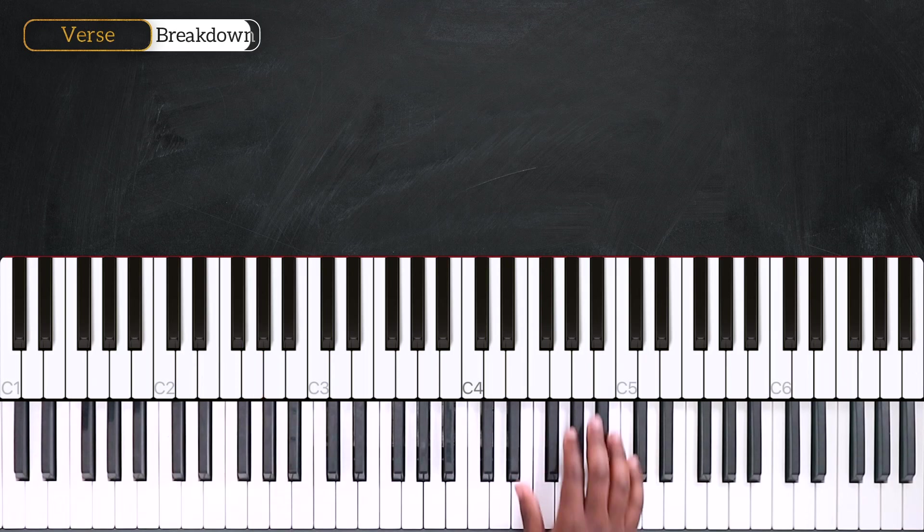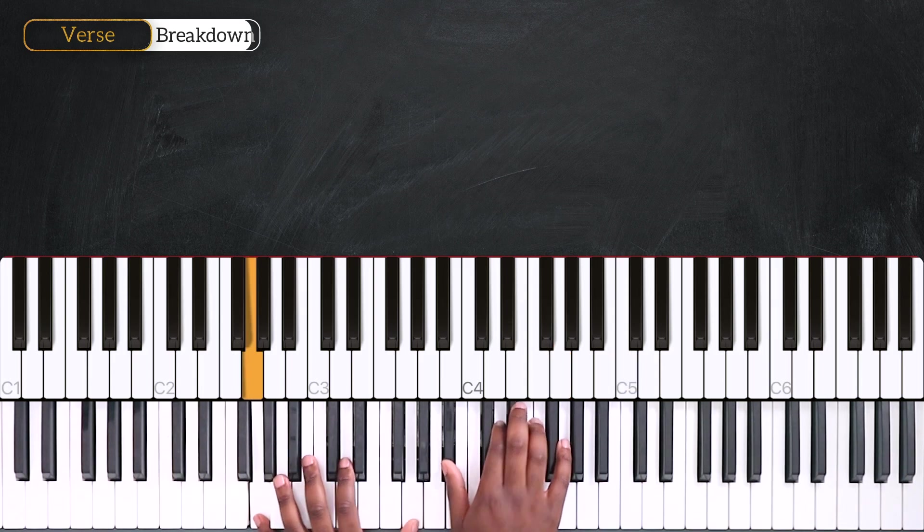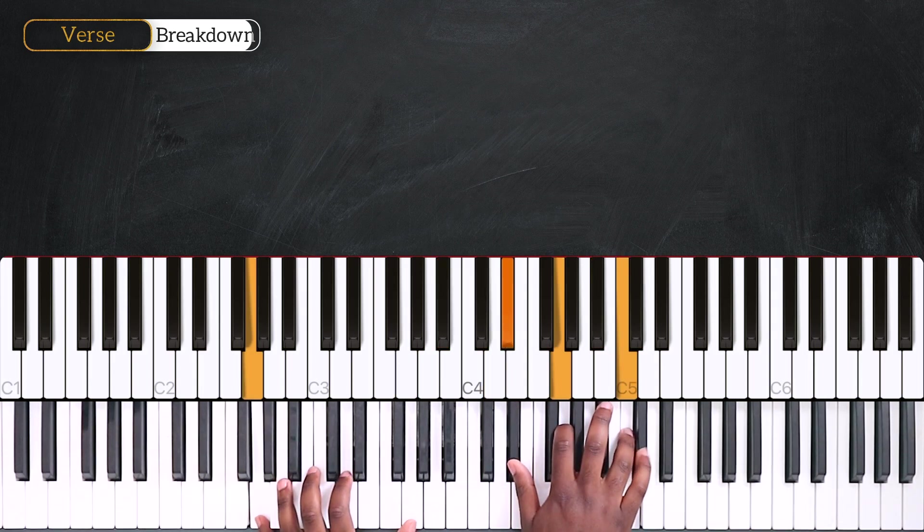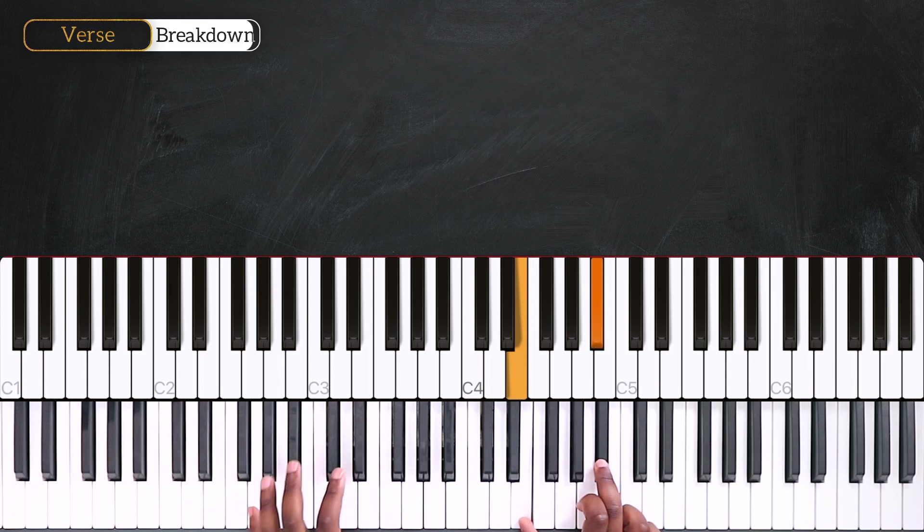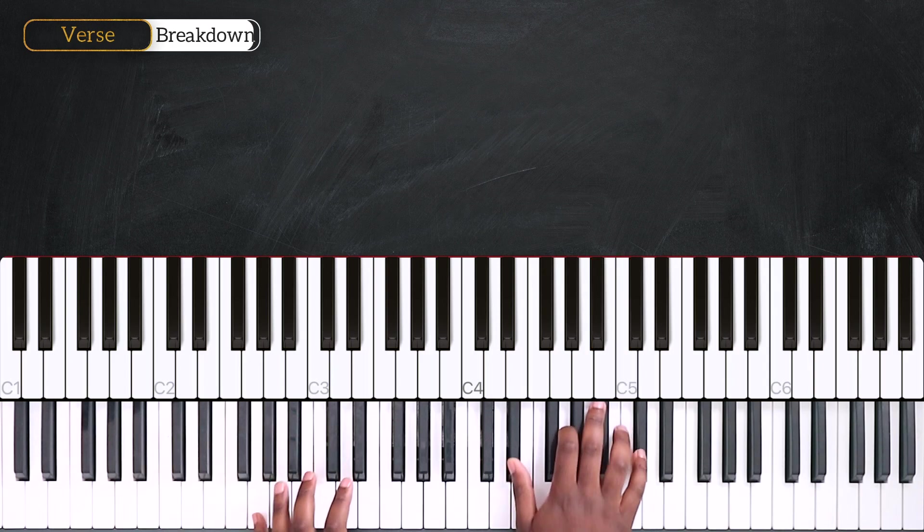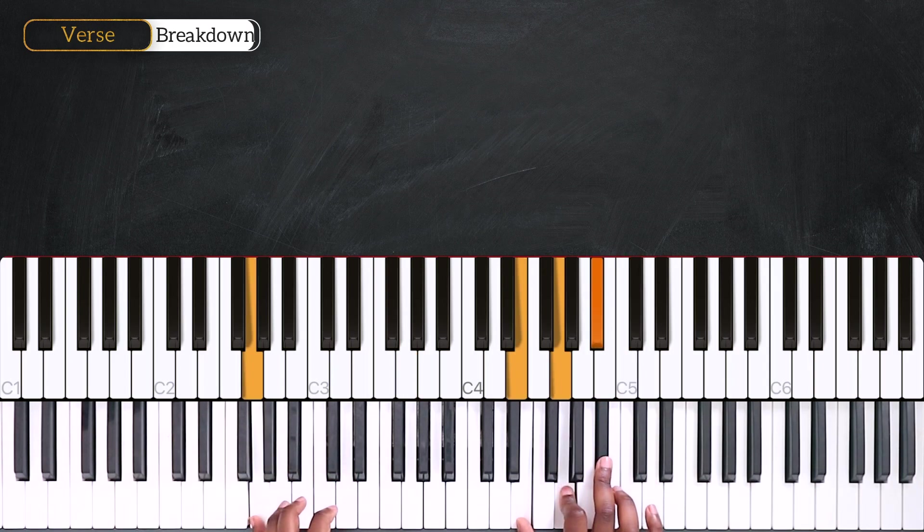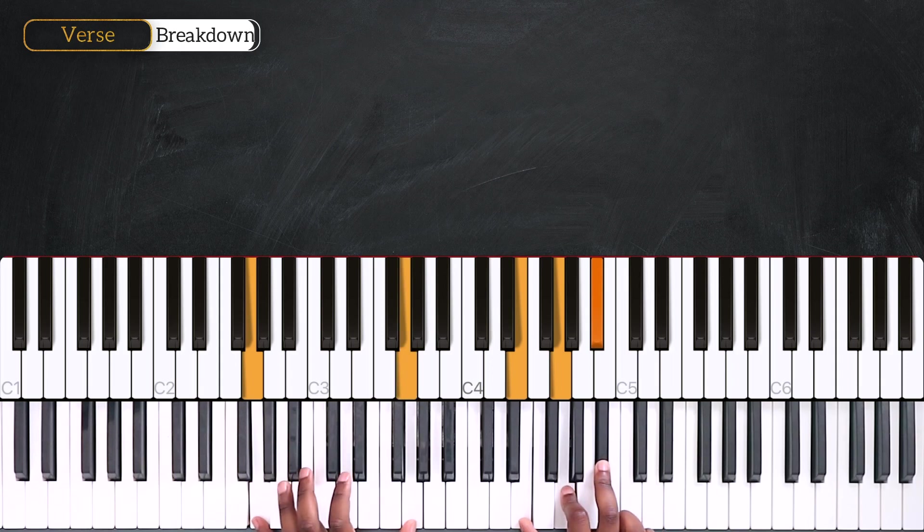And from here, I'm going to hold Eb and G, and play a back and forth between Db and C. And after that, I have Eb again with G on the left, followed by G, right hand.